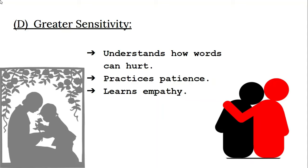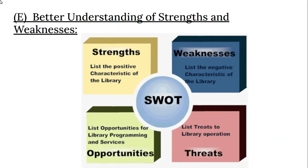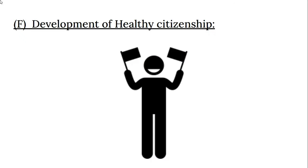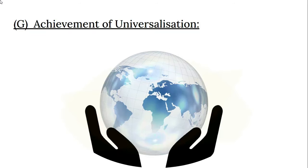The fourth importance is it creates greater sensitivity among people — children develop understanding of how words can hurt, and they practice patience and learn empathy. The fifth importance is better understanding of strengths and weaknesses. The sixth importance is the development of healthy citizenship, which is the status of a person recognized under the law as belonging to a country.